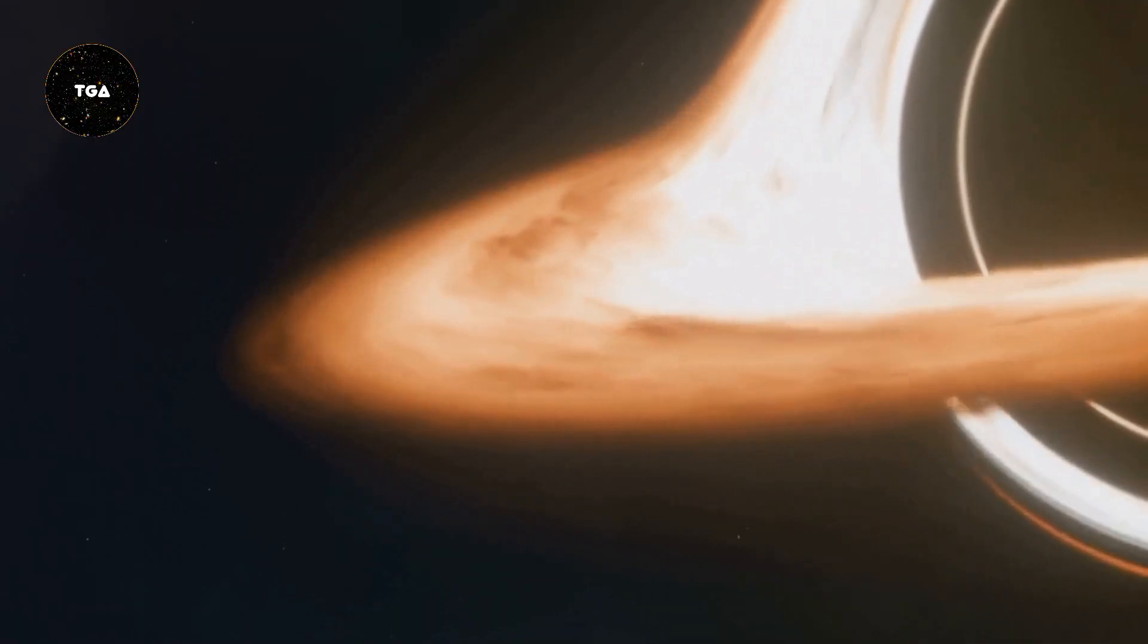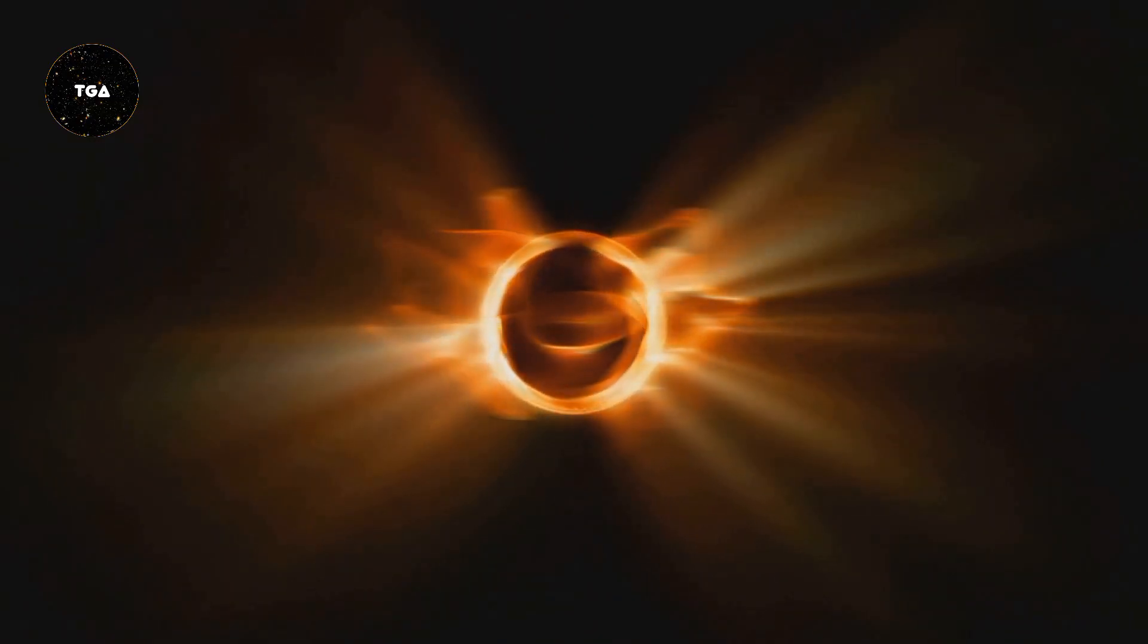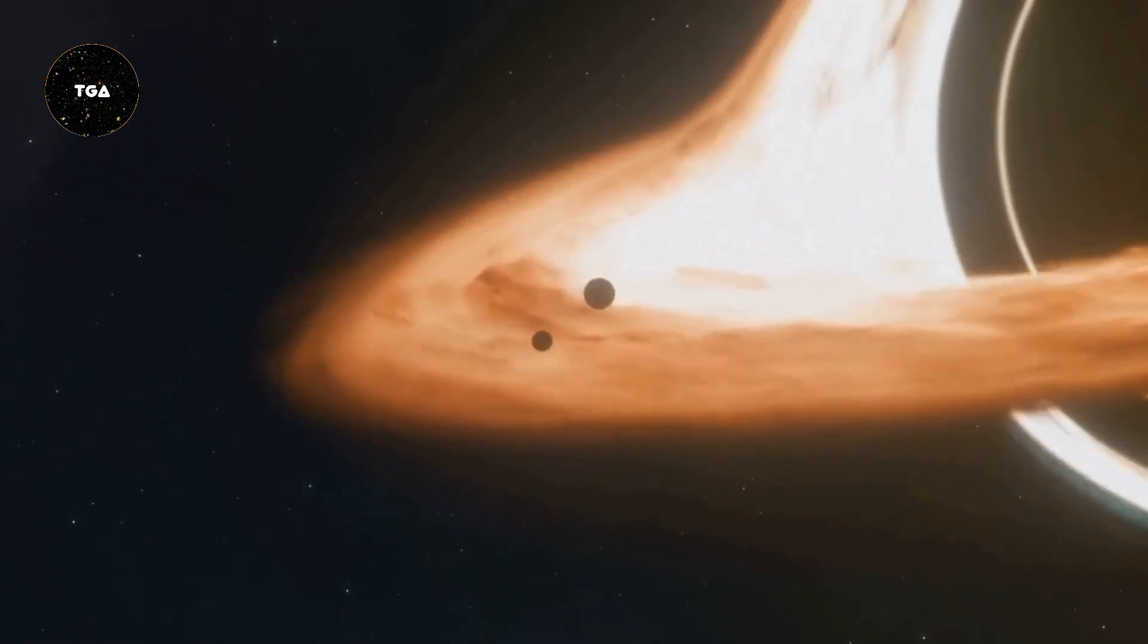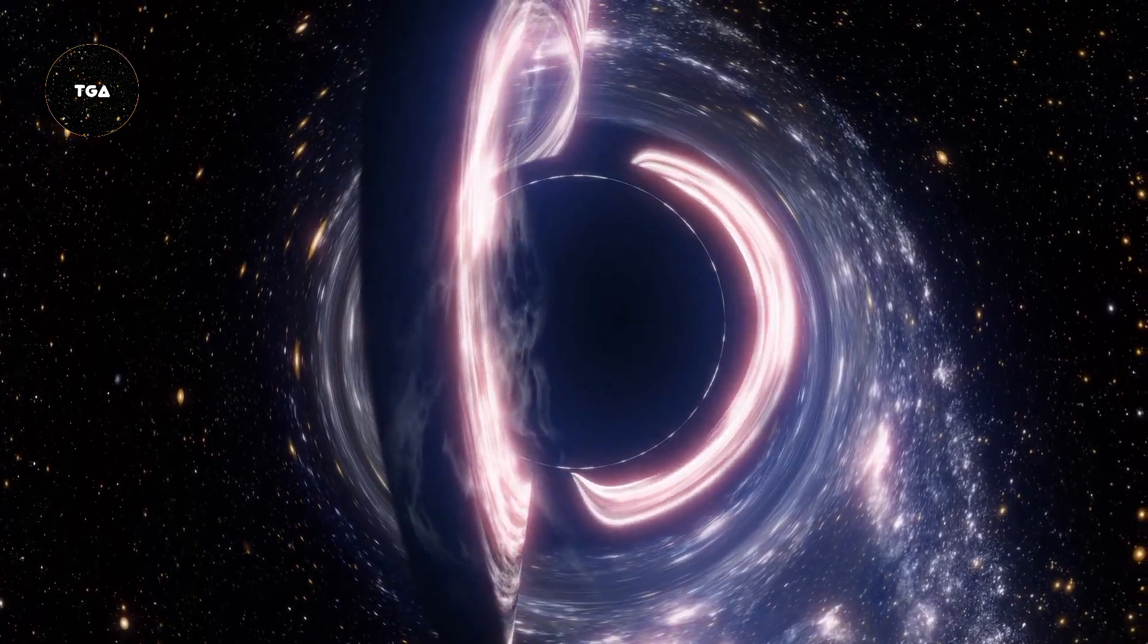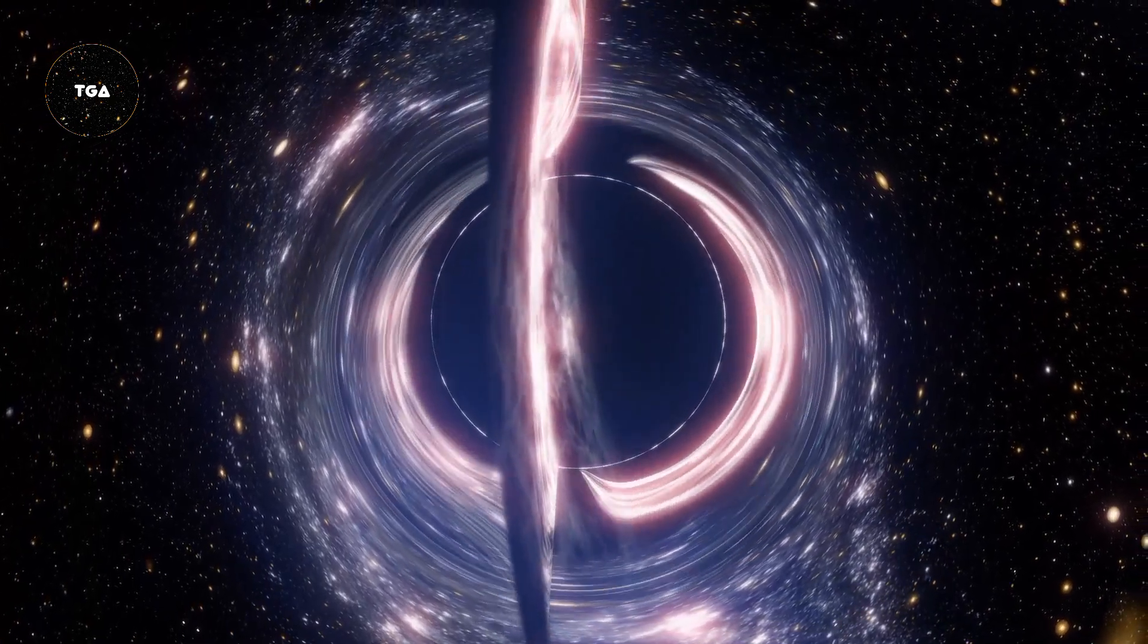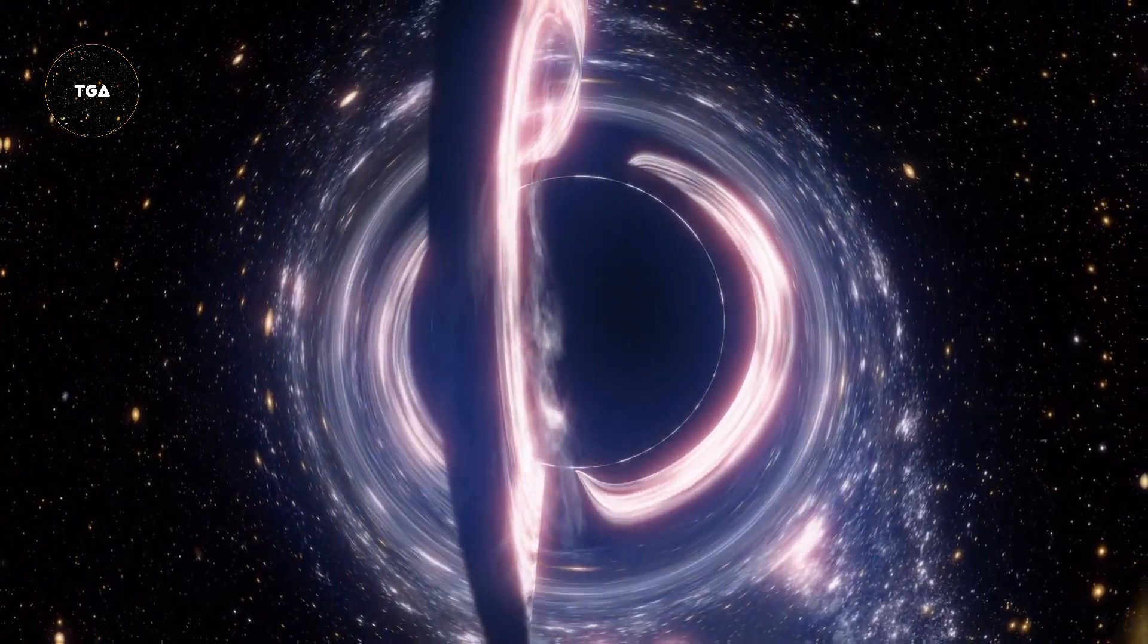Black holes have an event horizon, which is the point of no return. Once something crosses this boundary, it cannot escape. The event horizon size depends on the black hole's mass. The center of a black hole, where gravity is infinitely strong, is called the singularity. This remains one of the greatest mysteries in physics.